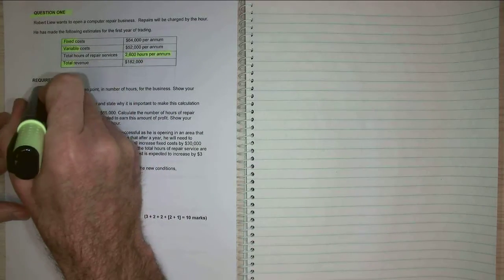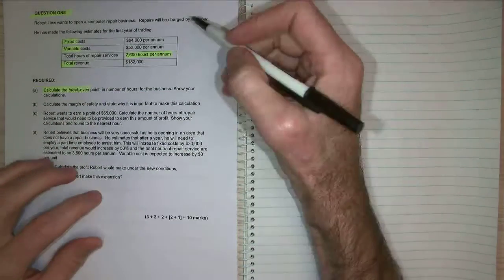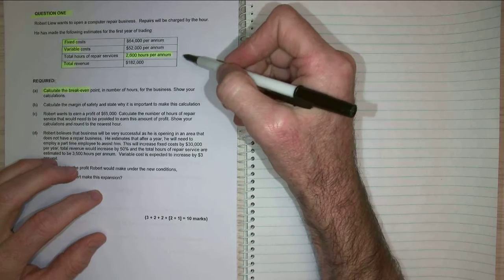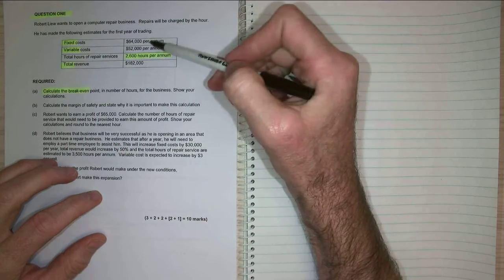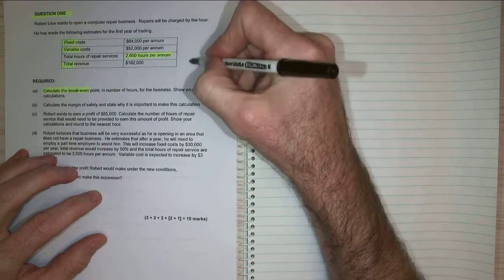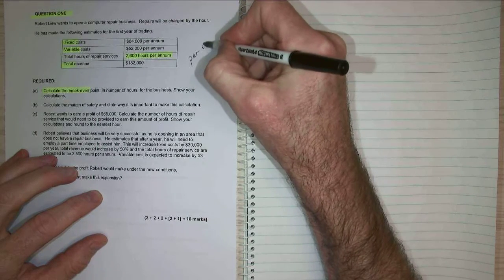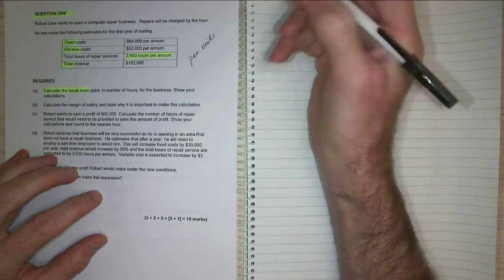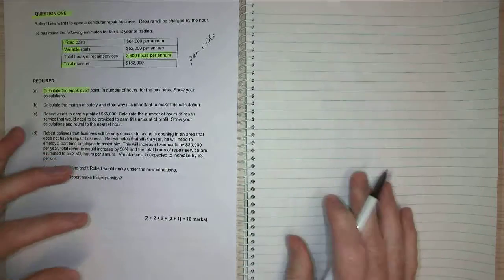So the first thing we need to do is calculate our break even point. Now, there's a number of things here that we need to, we've got our fixed costs as a total, our variable costs as a total. So we have to work out our per unit costs and revenues. So let's do that first.